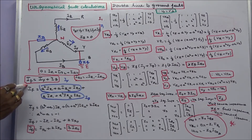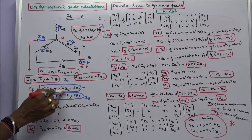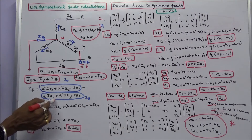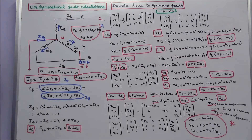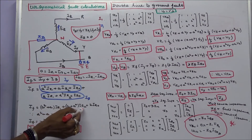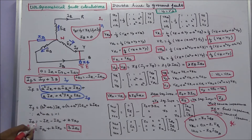Fault current IF is equal to IY plus IB. Expanding: IY equals A² into IR1 plus A into IR2 plus IR0, and IB equals A into IR1 plus A² IR2 plus IR0. Adding these two terms, IF equals (A² plus A) into IR1 plus (A plus A²) into IR2 plus 2 IR0. Since A² plus A equals minus 1, therefore IF equals minus IR1 minus IR2 plus 2 IR0.